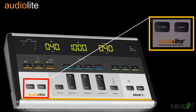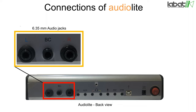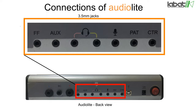L and R jack is used to connect the headphones. BC jack is used to connect the bone conduction transducer. FF jack is used to connect the free field speakers. O jack is used for auxiliary external input, like pre-recorded words.